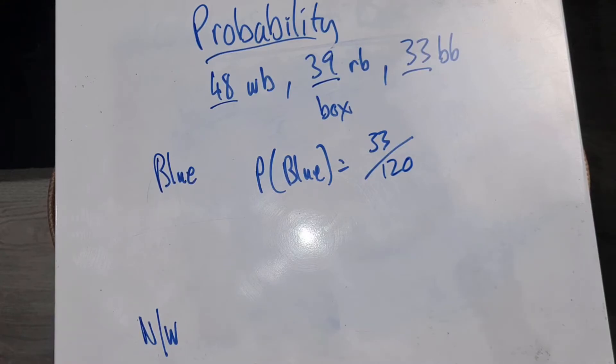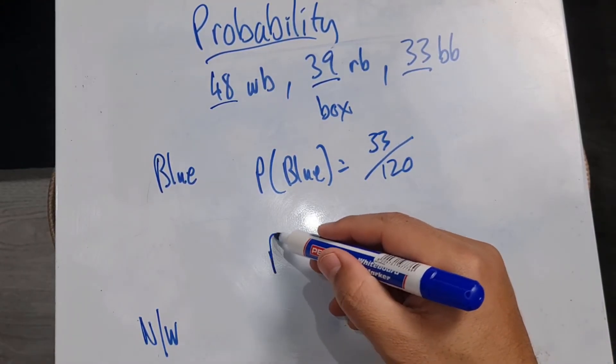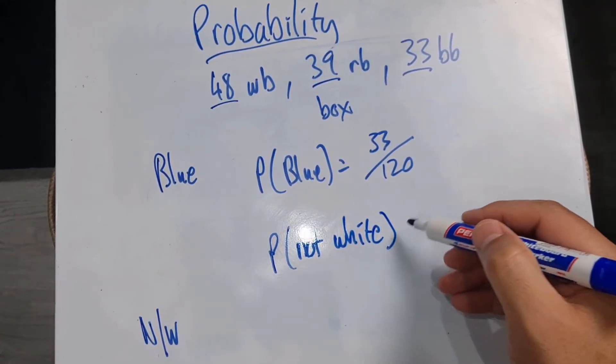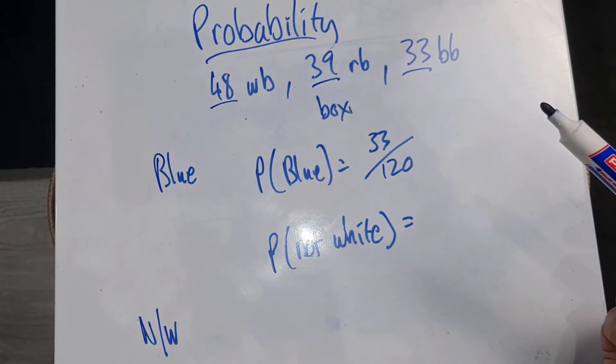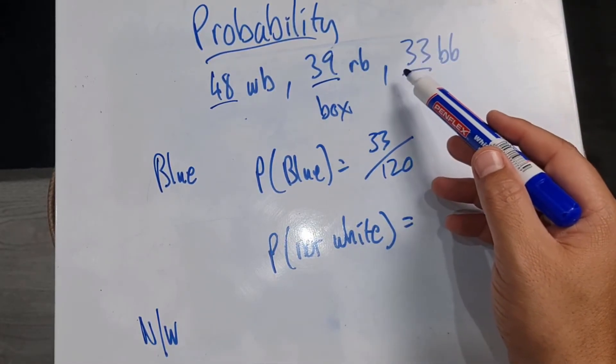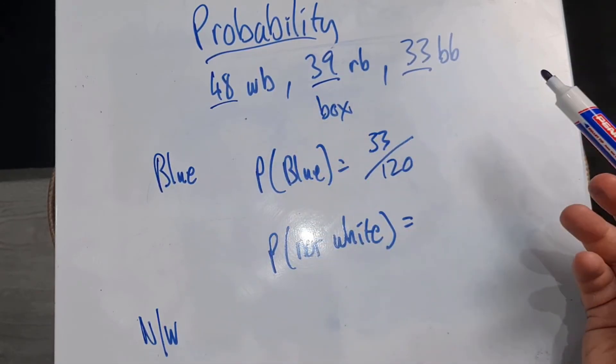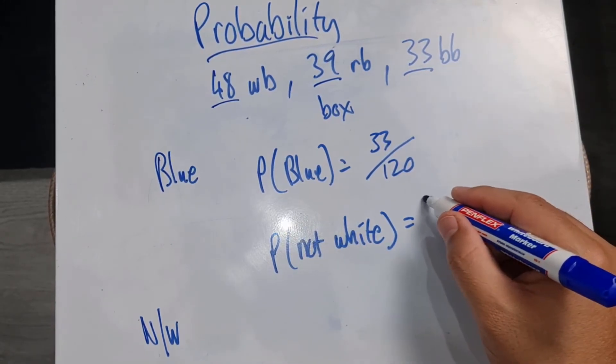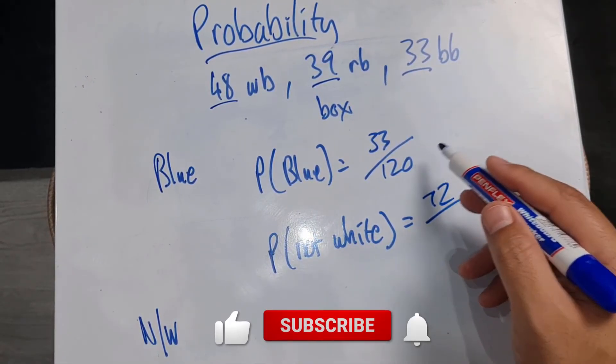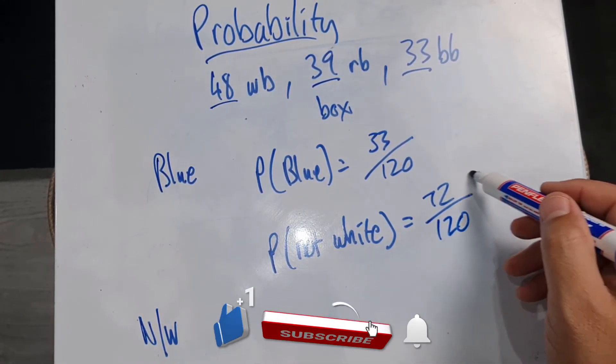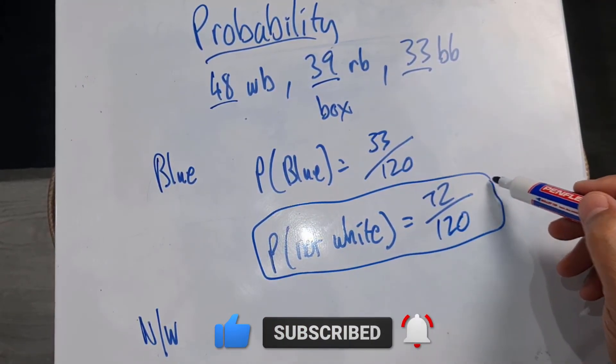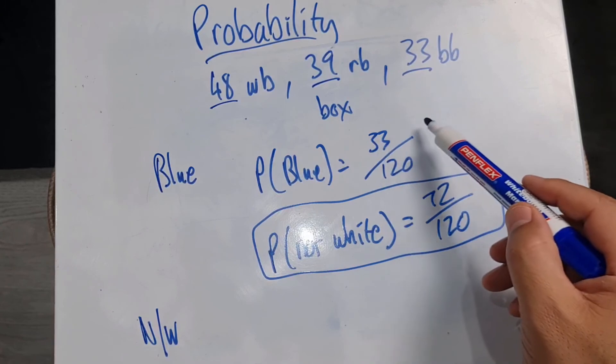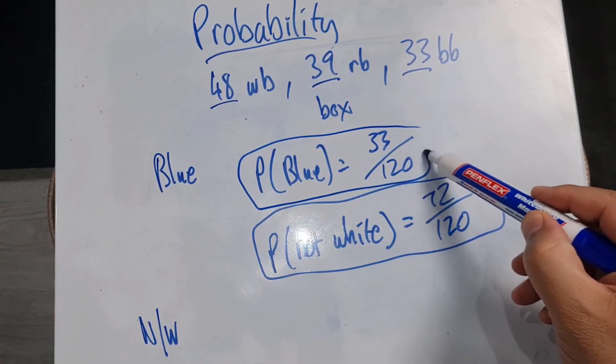Now they want us to look at the probability of it not being white. So let's write down here, not white. So what we now have to do is we've actually got to add those two together and say, we want everything except white. And in this case, there are two other options. So we'll add those two together and we get 72 and it's still out of the total number of events, which is 120. And that's how I end up with my probability of not choosing a white button. And this one is the probability of me choosing a blue button.